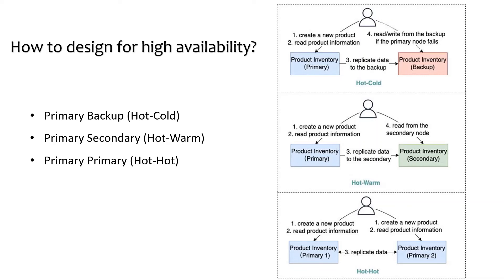The second option is primary-secondary. This architecture looks similar to primary-backup, but the secondary node can take read requests to balance the read load. Due to latency when replicating data from primary to secondary, the data read from the secondary may be inconsistent with the primary, so that needs to be taken care of.